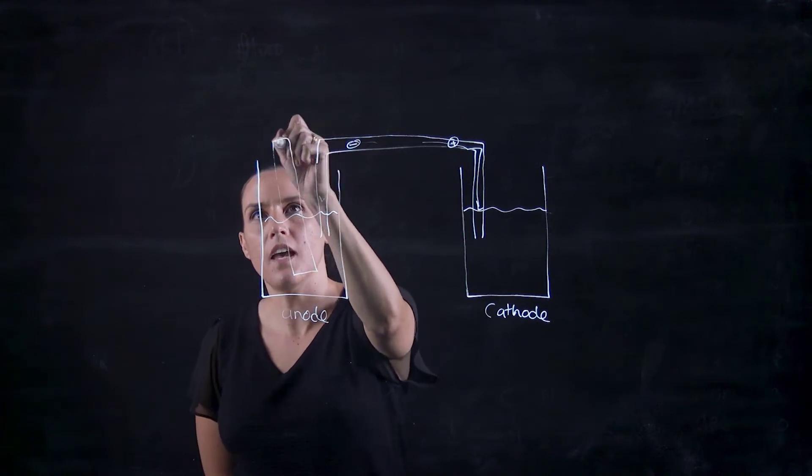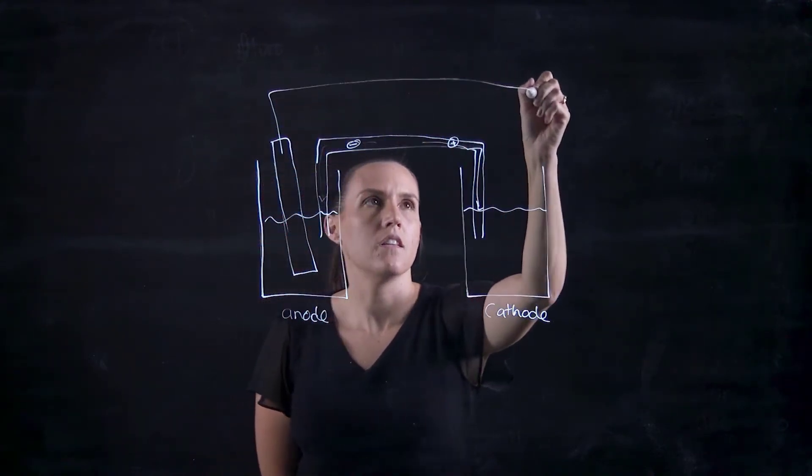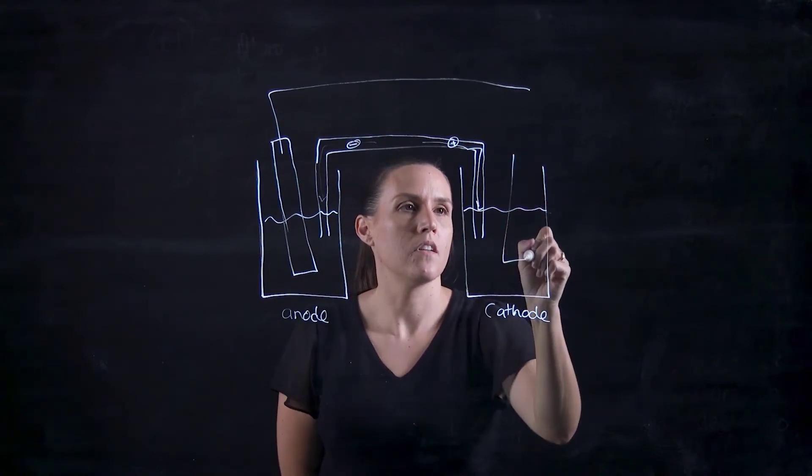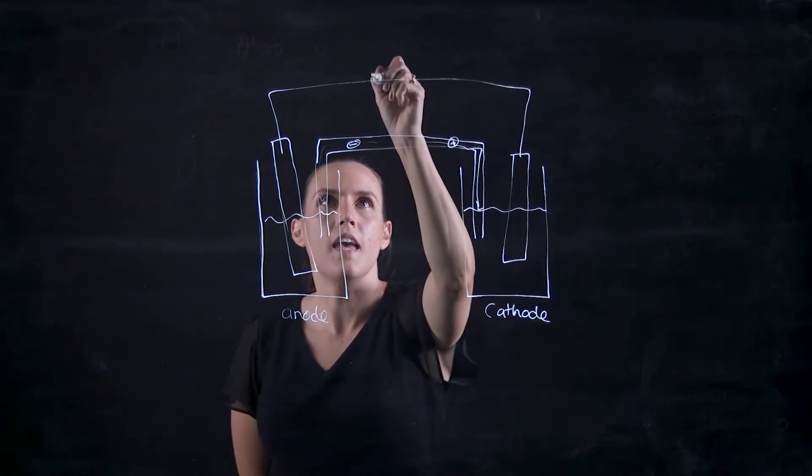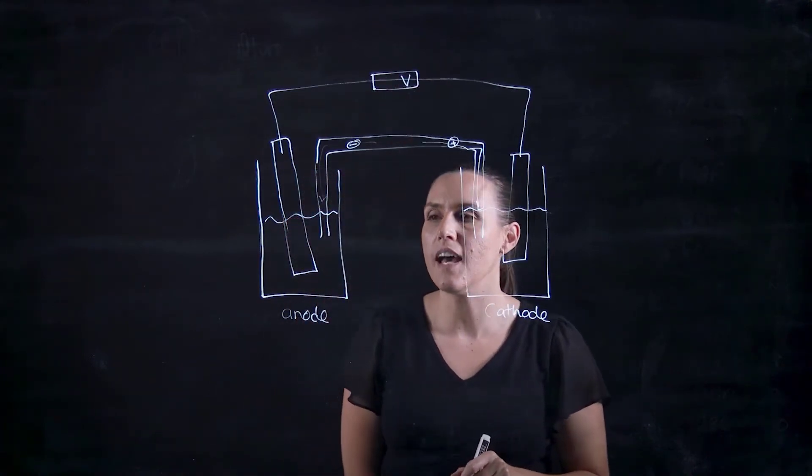These can be our electrodes that are connected up, and that would be the voltmeter where you could read that.